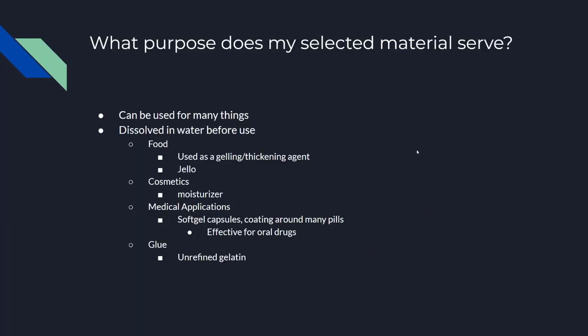What purpose does gelatin serve? It can be used for many things; however, it's commonly dissolved in water before use. It's often used in food as a gelling and thickening agent and is one of the primary ingredients in the popular food Jell-O. It's what gives it the gel-like consistency.